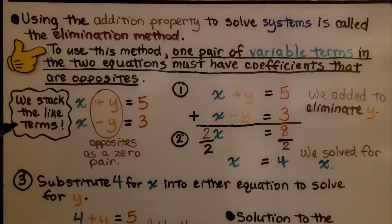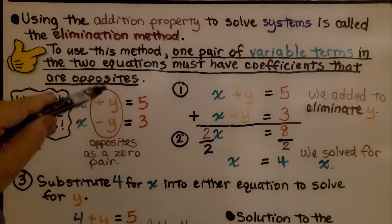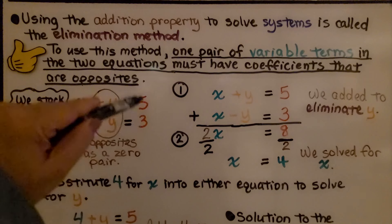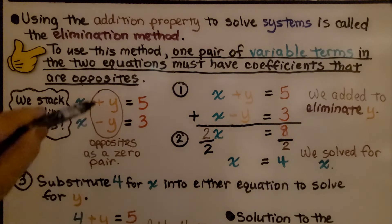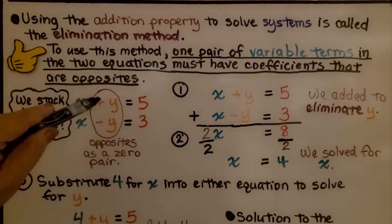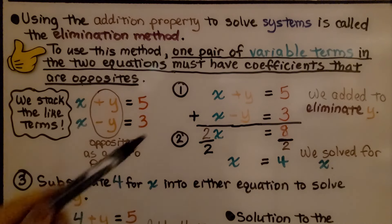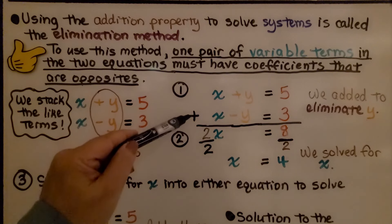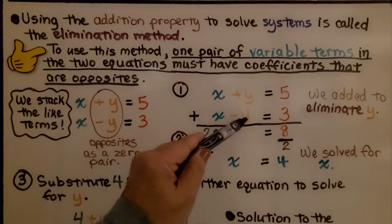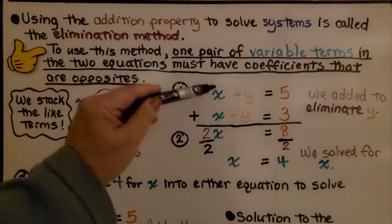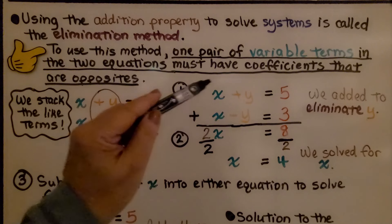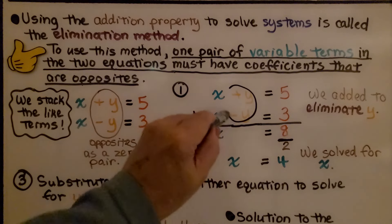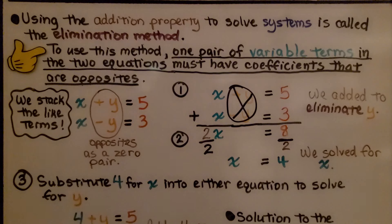We stack the like terms — we have like terms here for x, like terms here for y, and even after the equal sign we have constants. The opposites here, a plus y and minus y, we can make a zero pair out of them. We write it as x plus y equals five, plus x minus y equals three. We're adding a positive y plus a negative y, which creates a zero pair and eliminates the y variable.